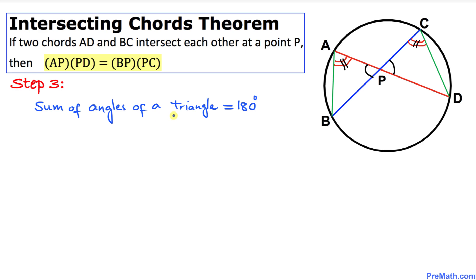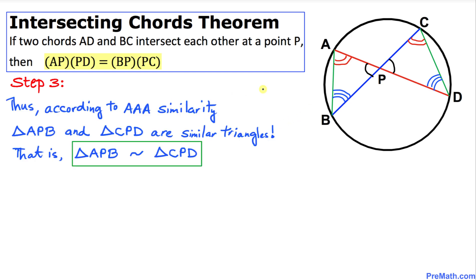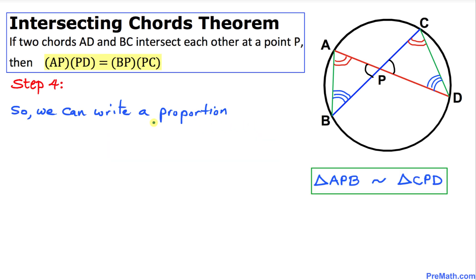Since the sum of angles in a triangle is always 180 degrees, the third angle in each triangle must also be congruent to the corresponding angle in the other triangle. By the Angle-Angle-Angle (AAA) theorem, if corresponding angles in two triangles are equal, the triangles are similar. Therefore, triangle APB and triangle CPD are similar triangles, and we can write their sides as a proportion.